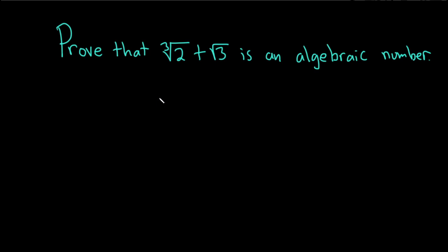Prove that the cube root of 2 plus the square root of 3 is an algebraic number. An algebraic number is a number that is a solution to a polynomial equation with integer coefficients. So we basically have to show that this number is a solution to such an equation.